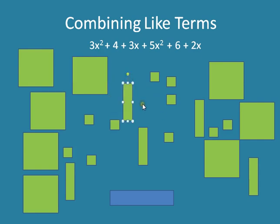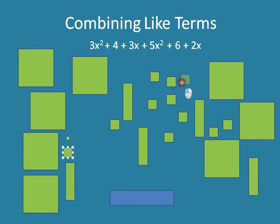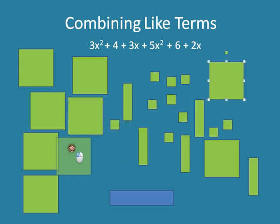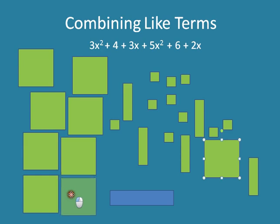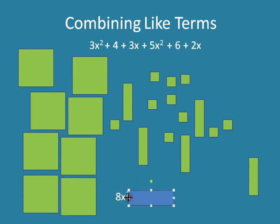What we need to do when we combine like terms is put the same kind of blocks together. So first I'm going to start with my x squareds — I'm going to put them all together in a nice neat group. Because I had 3x squareds and 5x squareds, so if I count them all up, that's 8 x squareds. Those x squareds are what we call a like term — the label that comes after the number.